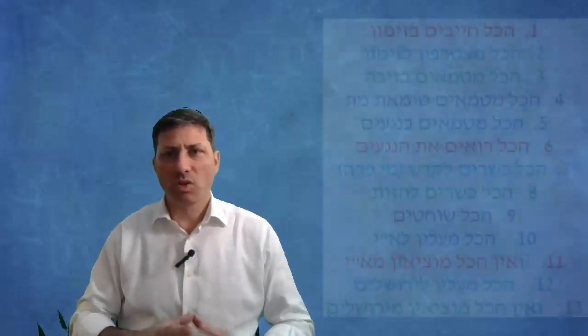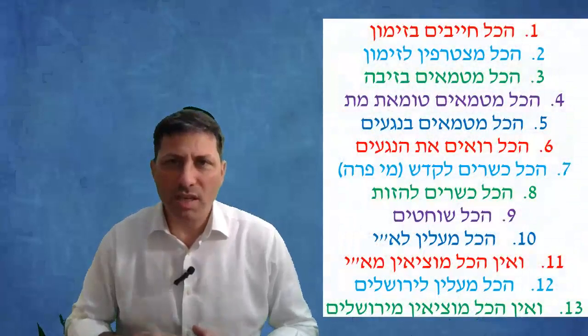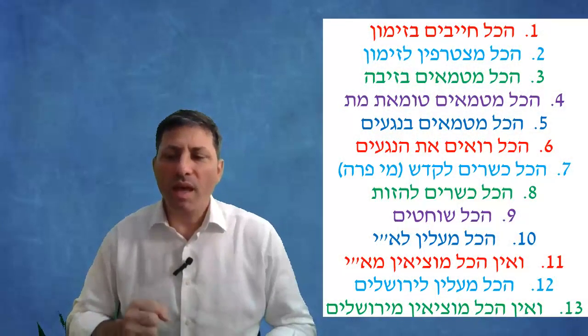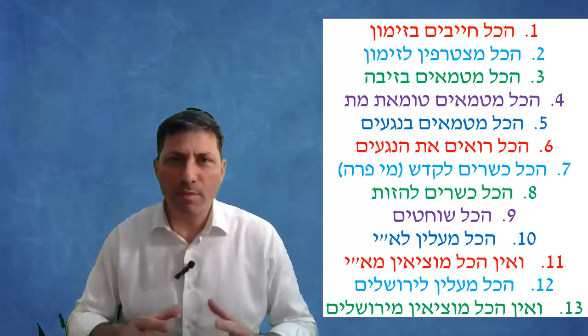We're continuing with the sugya of what's the meaning behind the word hakol, what does it come to include. The Gemara brings another 13 cases throughout Shas that the Mishnah says hakol and what does it come to include. The Mishnah says hakol chayav b'zimun - we know we say Rabbi Saim v'voreich, Rabbi Saim v'vom b'nshin.